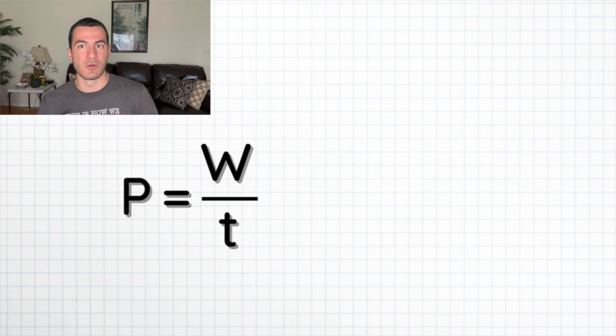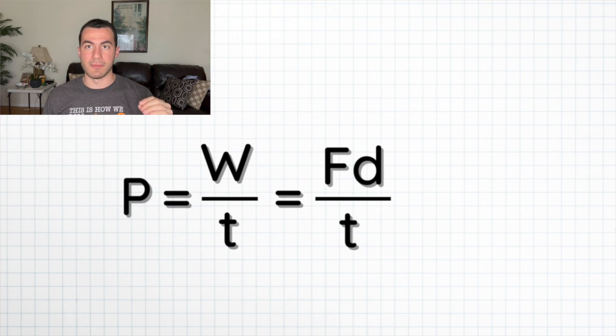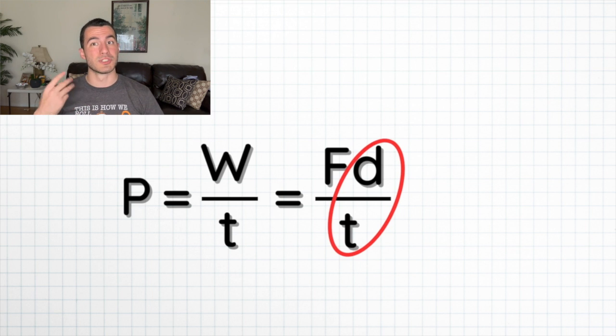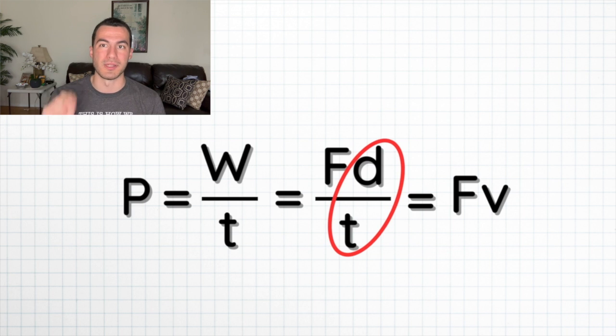My last tip is that if you don't know a formula, you can always derive it. That's the beauty of MCAT formulas — many of them can be derived from other formulas. For example, power is equal to work over time. If we extend that, work over time equals force times distance over time, and distance over time equals velocity. So we can derive that power is also equal to force times velocity, rather than having to memorize two separate formulas.